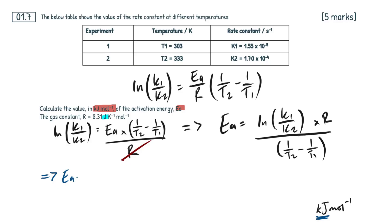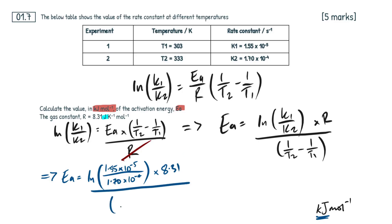So activation energy equals the natural log of K1 over K2 — so K1 is 1.55 × 10⁻⁵ divided by K2, which is 1.70 × 10⁻⁴ — multiplied by the gas constant 8.31, and then divide all of that by (1/T2 minus 1/T1), which is 1/333 minus 1/303. If we plug that into our calculator, we get an answer of 66,936.7478...